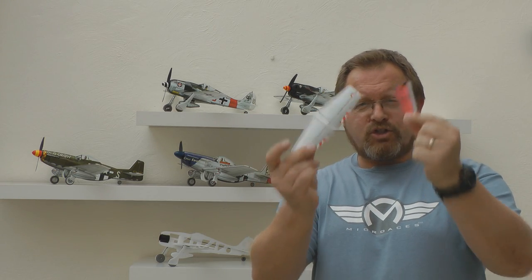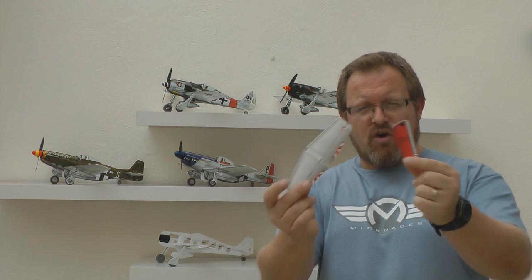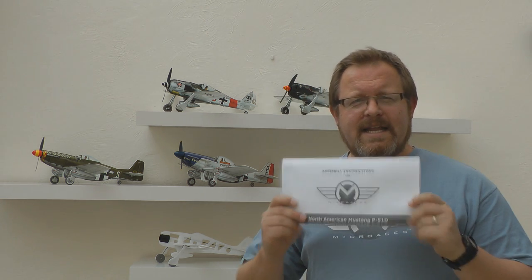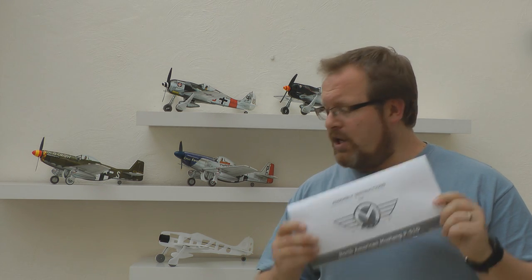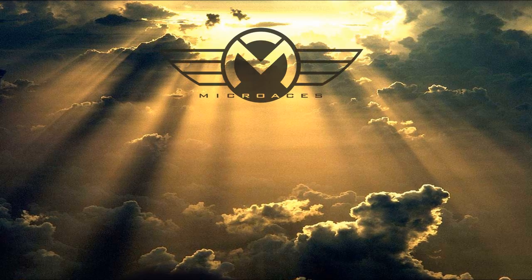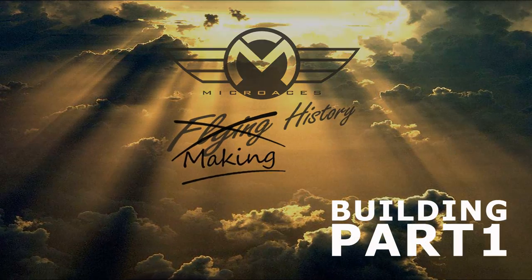So there we go. We've now got two bits of our P51D Mustang Cripes are mighty ready and waiting for the fuselage construction. In the next episode what we're going to do is go through exactly that. Look at the fuselage, how it goes together and make sure we're doing it all right. If you can't wait for that video and you want to crack on with your build, by all means do. What you've seen in the stages that we've gone through today will help immensely in bringing the rest of the aircraft together for you. I hope to see you in the next episode. Thank you very much for watching. This is Micro Aces making history.